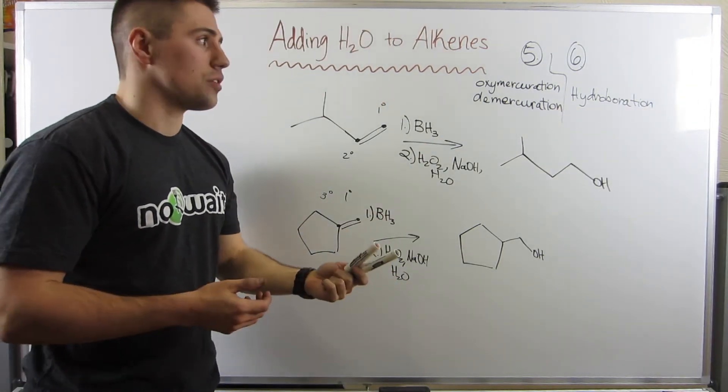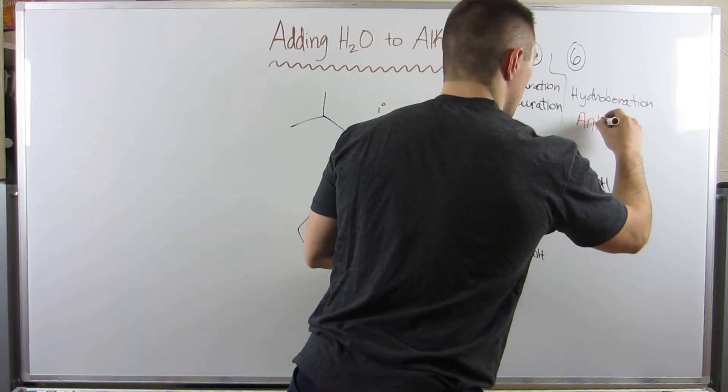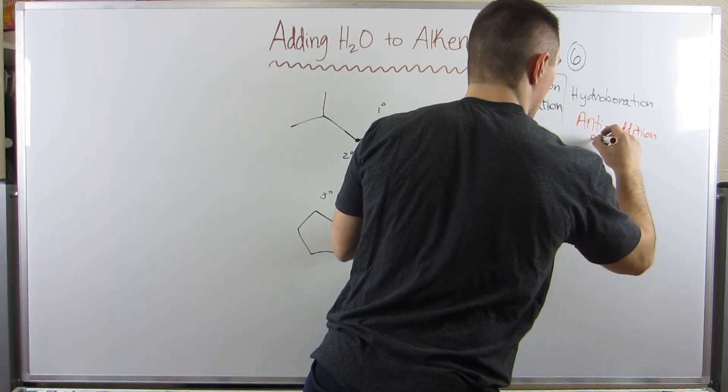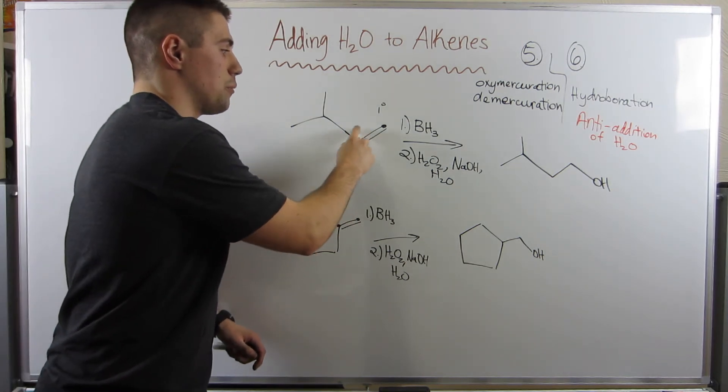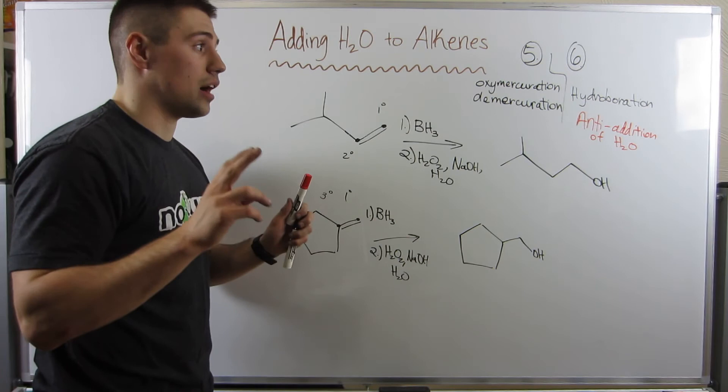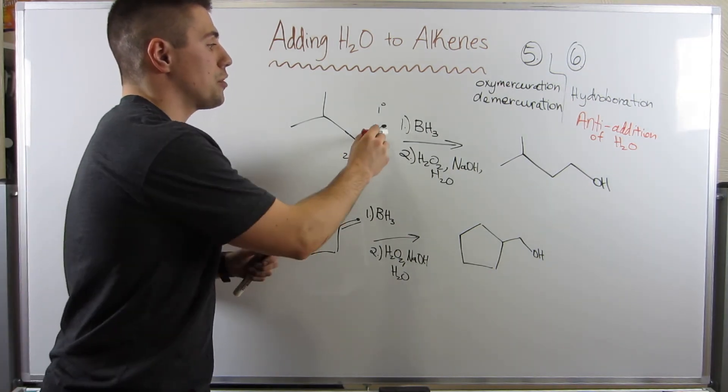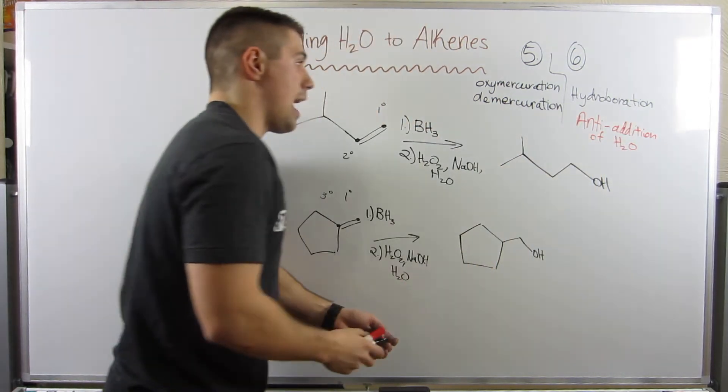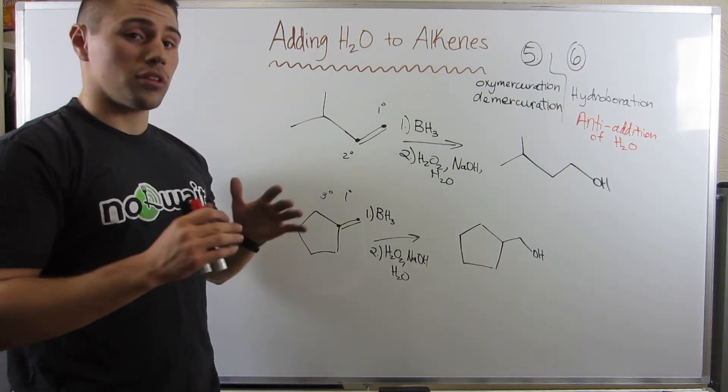And what this is called, this is called an anti-addition of water. And I'll explain why it's anti just because this is kind of where it would normally go, this position. That's like the major kind of the regular addition location, the more substituted carbon. But, if you put it on the least substituted carbon, we do an anti-addition of water. And we have another one of these mechanisms similar coming up. Okay. That was a lot.